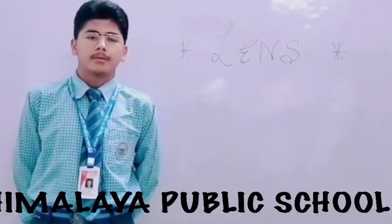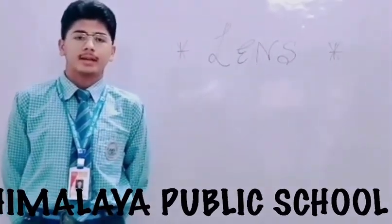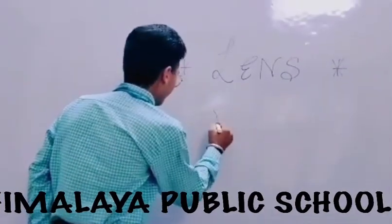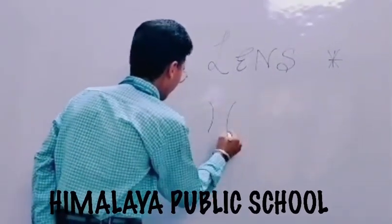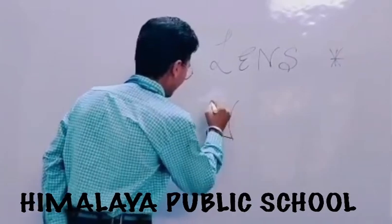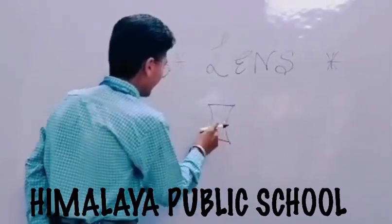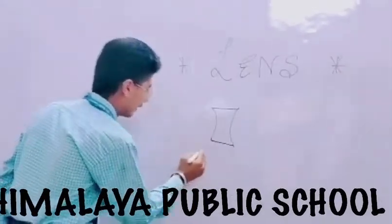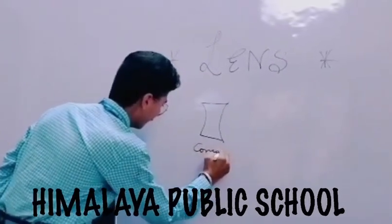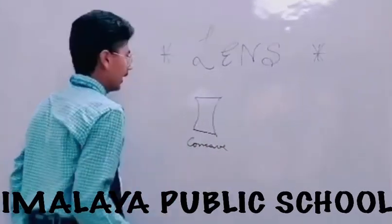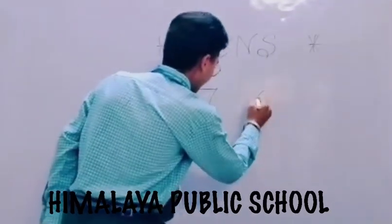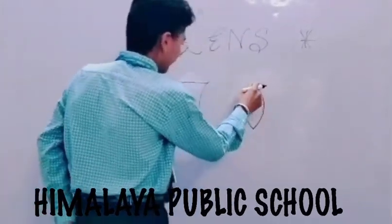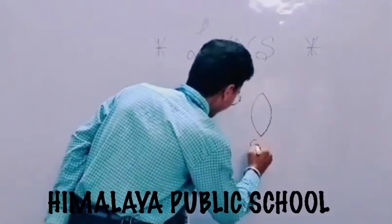Now there are two types of lens. First is concave and second is convex. Lens which is thinner at its middle and thicker at its edges is called a concave lens. And lens which is thicker at its middle and thinner at its edges is called a convex lens.